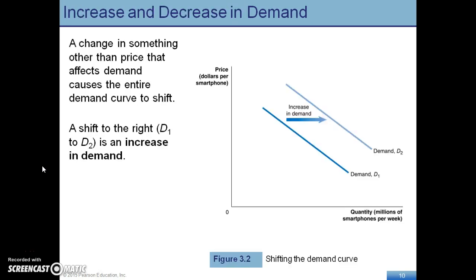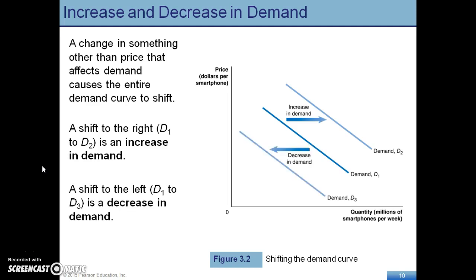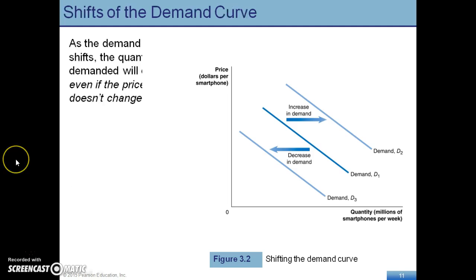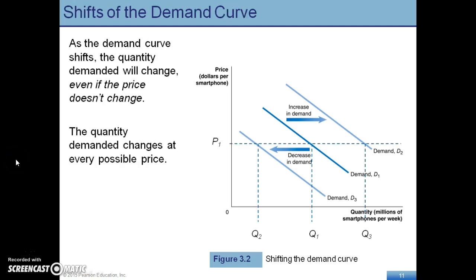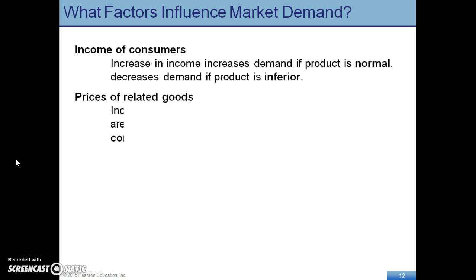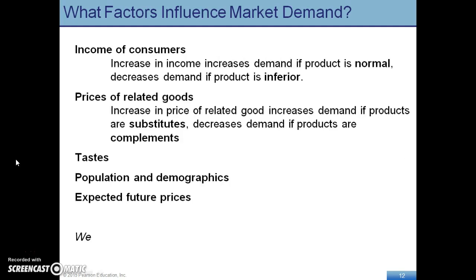Here's the demand curve. We want to look at shifts in the demand curve. Anything that shifts to the right is an increase in demand; anything that shifts to the left is a decrease in demand. We all start at demand one — a shift right is an increase, a shift left is a decrease. Shifts can occur for many different reasons, and we're going to go through the factors of why the demand curve might shift.